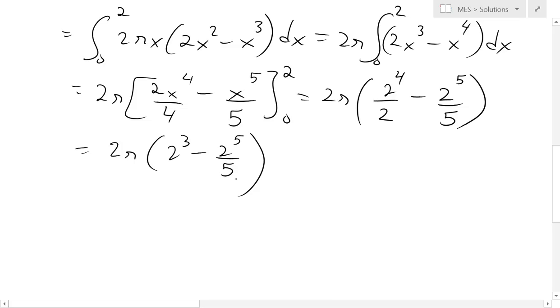And now what we could do is actually just factor this 2 to the 3 out of there, because that's a like term in both of these terms. So we'll get 2 times pi times 2 to the 3. Take that out, that becomes 1. Divide it out. This will be now 2 squared because we removed 2 cubed from it.